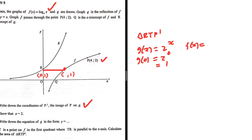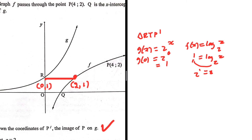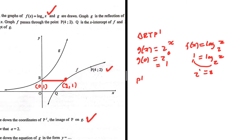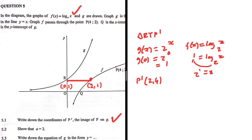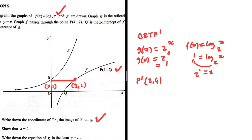Since f(x) = log_x base 2 and the y-value at T is 1, we solve: log_x base 2 = 1, so 2¹ = x, giving x = 2. So T has coordinates (2, 1). Recalling from 5.1 that P' has coordinates (2, 4), the x-value of P' is also 2, so P' lies on g somewhere above T.